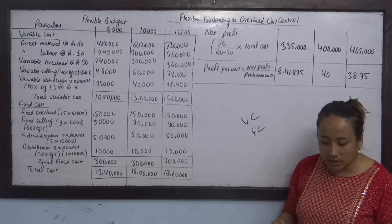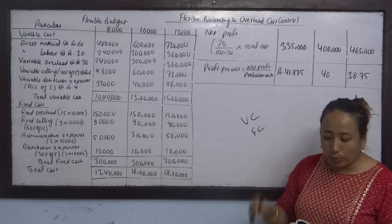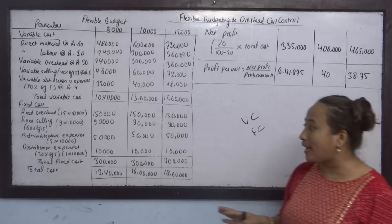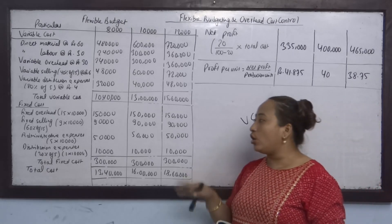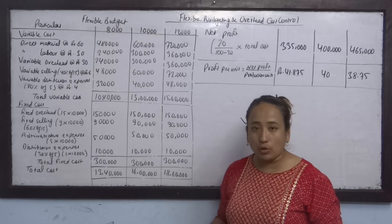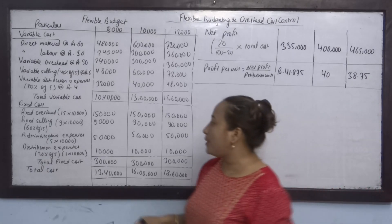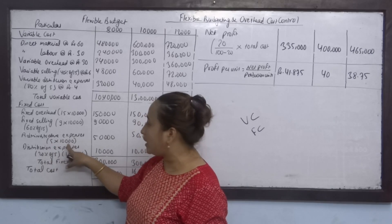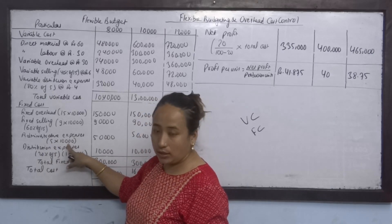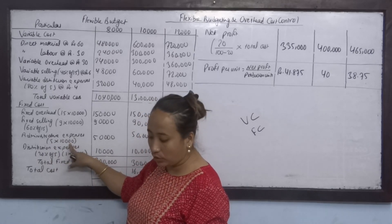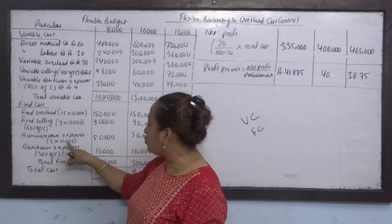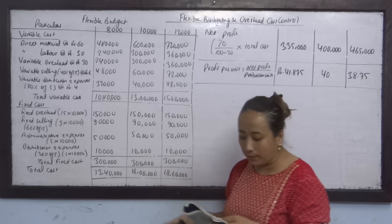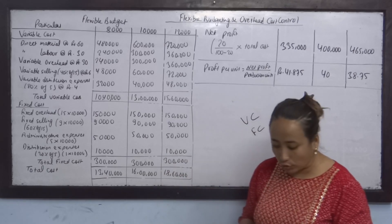Administrative expenses are 100% fixed at 5 rupees per unit. So 5 into 10,000 equals 50,000, and this fixed cost remains 50,000 across all activity levels.